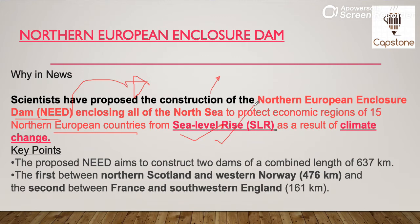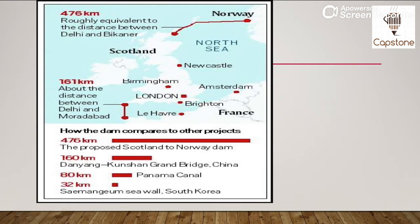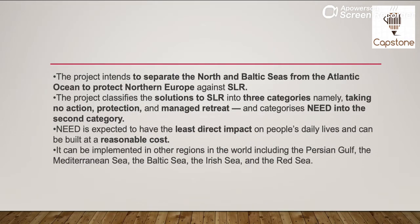Ab agar is dam ki, is project ki baat karein, ye kya propose karta hai — ye do dams banane ki baat karta hai. Pehla dam Scotland se Norway ki taraf banaya jayega, aur doosra dam France aur England ke beech banaya jayega. In do dams ko banane ke kaaran, jo bhi sea level rise hona hai, usse ye countries bach sakenge. Aur ye project intent karta hai jo North Sea aur Baltic Sea hai unhe separate karna from the Atlantic Ocean, taaki Northern Europe ko sea level rise se bachaya ja sake.